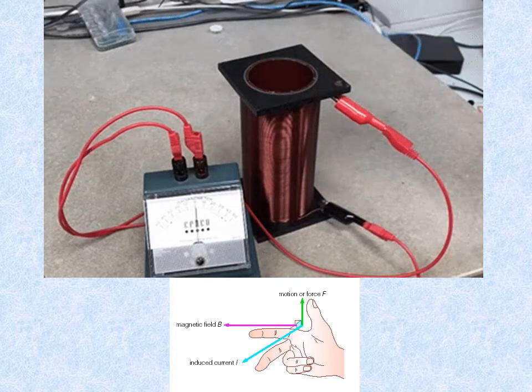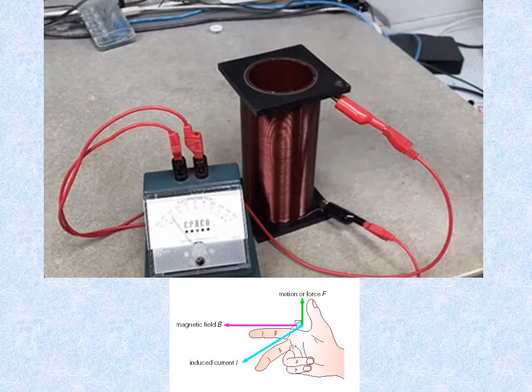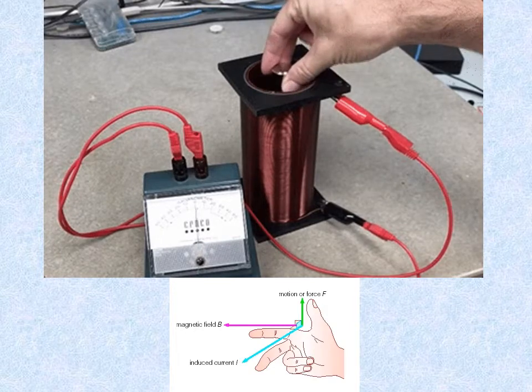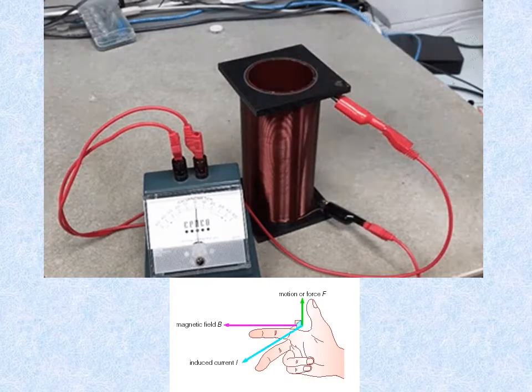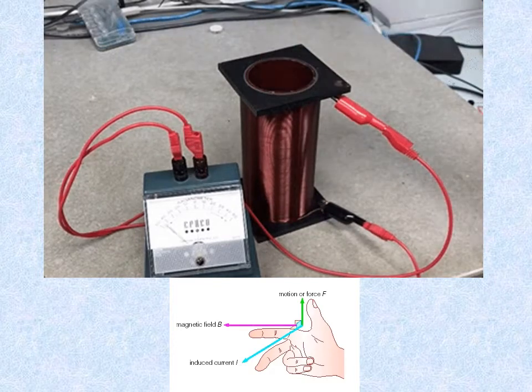A magnet is moved up close to a coil of wire connected to a meter, which measures electric voltage. The strength of the magnet's field increases as it gets closer to the coil and, as it does so, a voltage, and therefore a current, are generated.